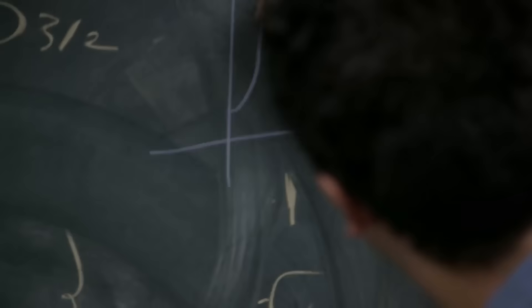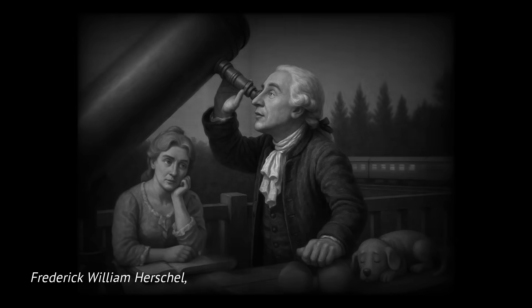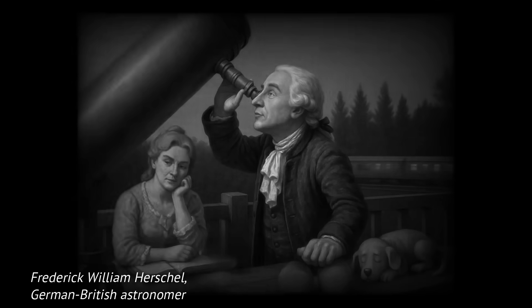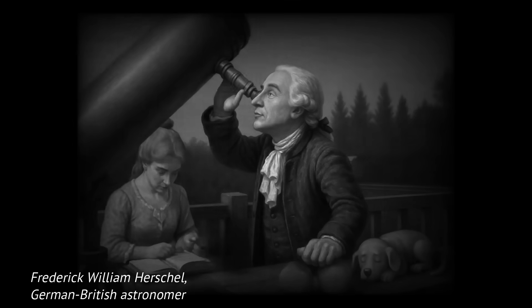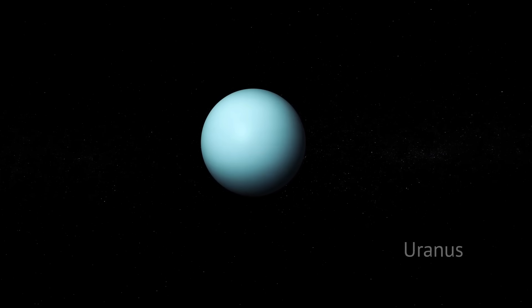But why do astronomers even think Planet 9 exists in the first place? In 1781, an English astronomer named William Herschel was scanning the sky with the telescope he built himself. He was looking for comets, but instead, he stumbled upon a new object that didn't quite behave like a comet. Over time, astronomers realized this object was orbiting the sun like a planet, slow, steady, and distant. They named it Uranus.